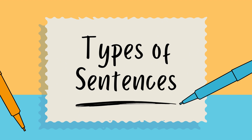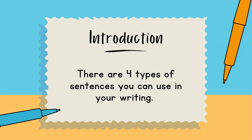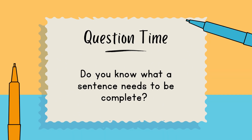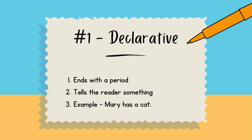There are four types of sentences you can use in your writing. The first is the declarative sentence. It is termed declarative because it declares something. It ends with a period and tells the reader something. For example: 'Mary has a cat.' This is a fact about Mary, and it is a declarative sentence.